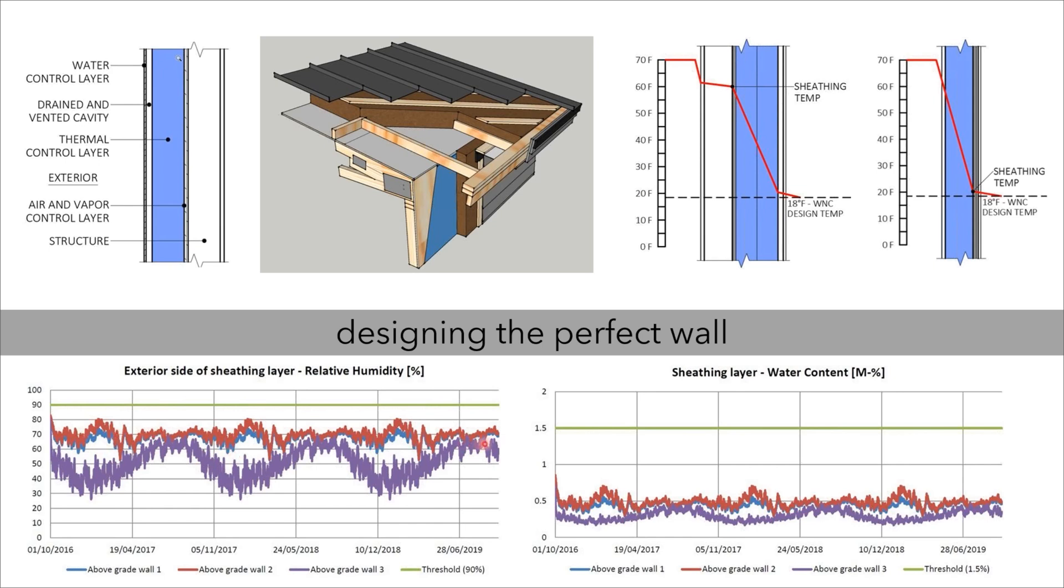We were looking at different options for the amount of insulation. This is the exterior side of the sheathing layer, what the RH is, and that's this spot right here. Then the water content in the sheathing layer, the moisture percentage, that's what this is here, and it's showing us that we're well below our threshold.